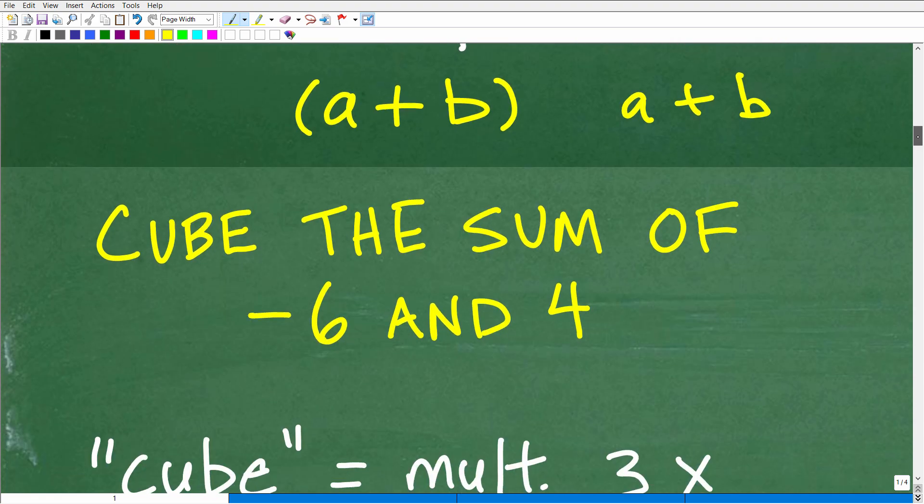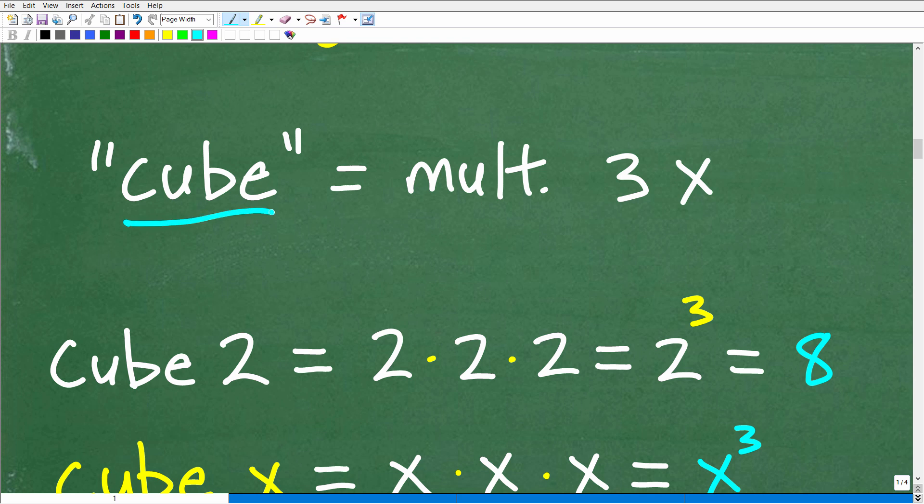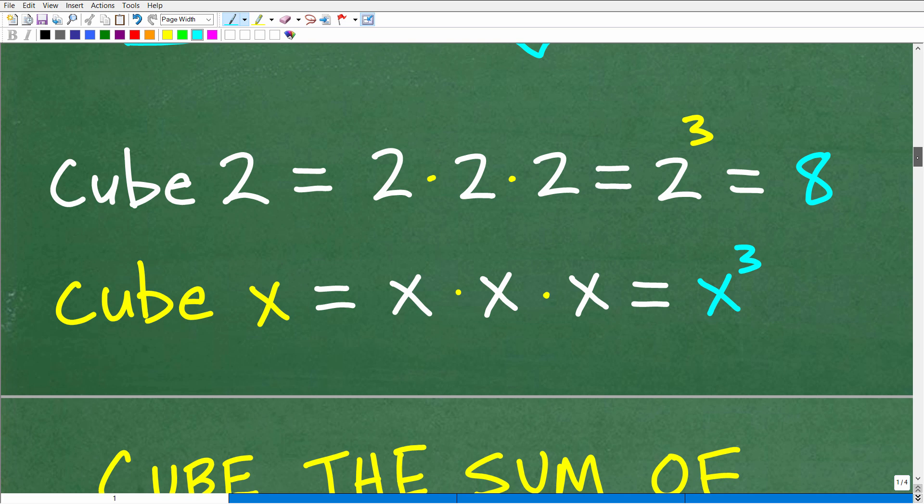Now let's talk about this second word that we have to know something about, and that is cube. We want to cube the sum of negative 6 and 4. Hopefully you're familiar with that word. But the cube, all this means is to take whatever number or variable that you're dealing with and multiply it by itself three times. Let's take a look at a simple example. We'll cube 2. So the cube of 2 would just be take 2 and multiply it by itself three times. So 2 times 2 times 2. 2 times 2 is 4. 4 times 2, of course, is 8.